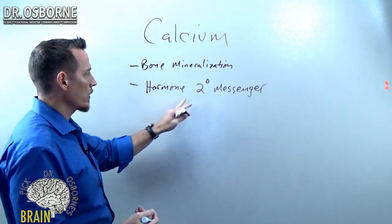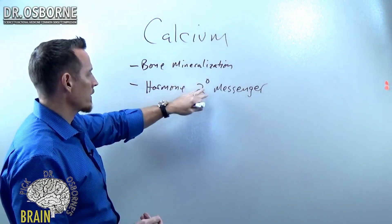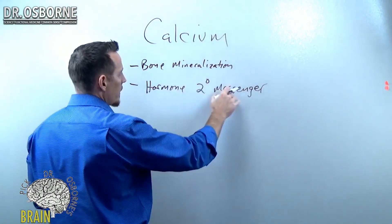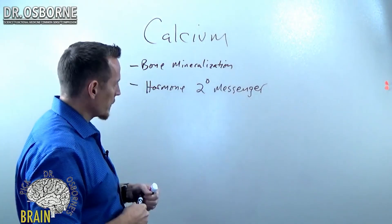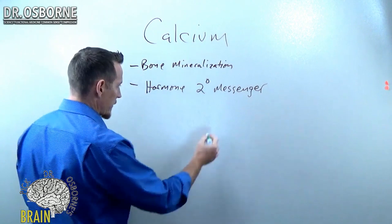This is one of the most critical functions of calcium, two with a zero above, that's secondary. That's what that stands for. It's a hormone secondary messenger. Let me draw you a picture and explain to you what that means. This is a critical function of calcium.